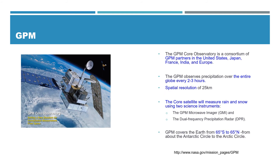The second is GPM. GPM is the Global Precipitation Measurement mission to measure rainfall. The GPM Core Observatory is a consortium of partners in the United States, Japan, France, India, and Europe. GPM observes precipitation over the entire planet every two to three hours. It has the same spatial resolution of 25 kilometers, and the core satellite measures rain and snow.